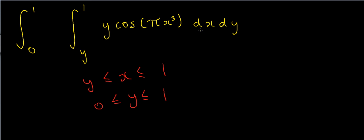So what I want to do is change the order of integration. So instead of having my function times dx dy, I want to have my function with some changed limits — which I'll show you how to change — first with respect to y and then with respect to x. That's much easier to deal with because I know I have to integrate y, but I don't know how to integrate cosine pi x cubed.